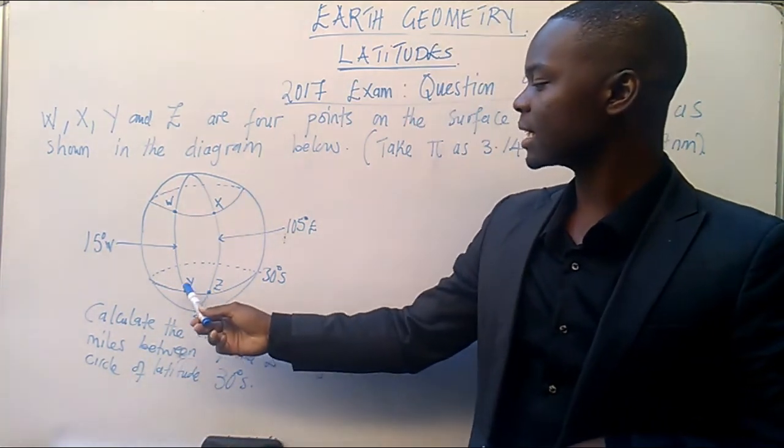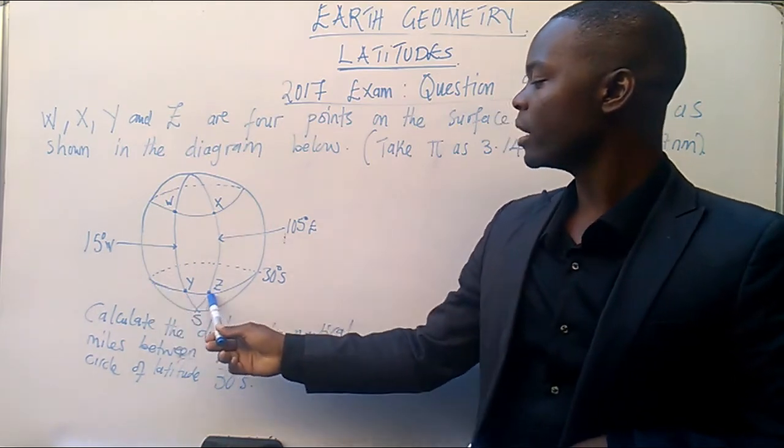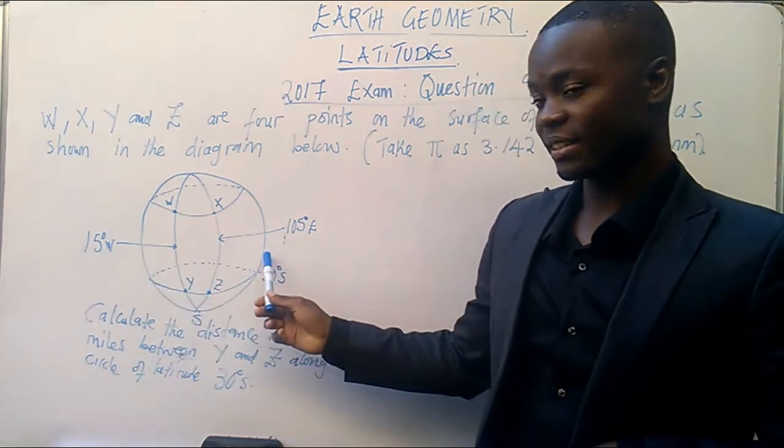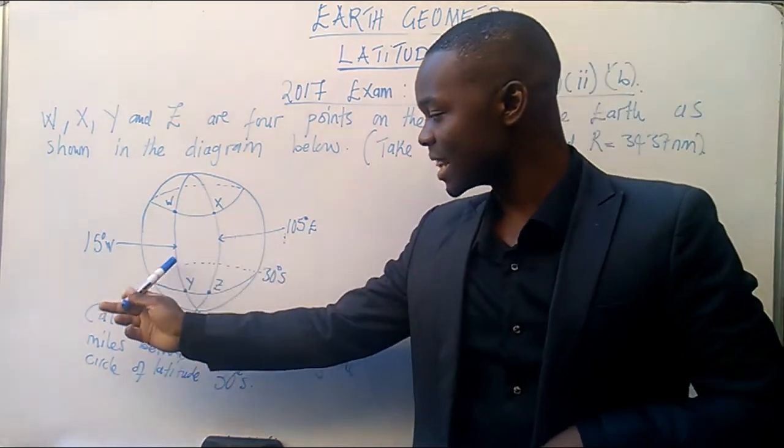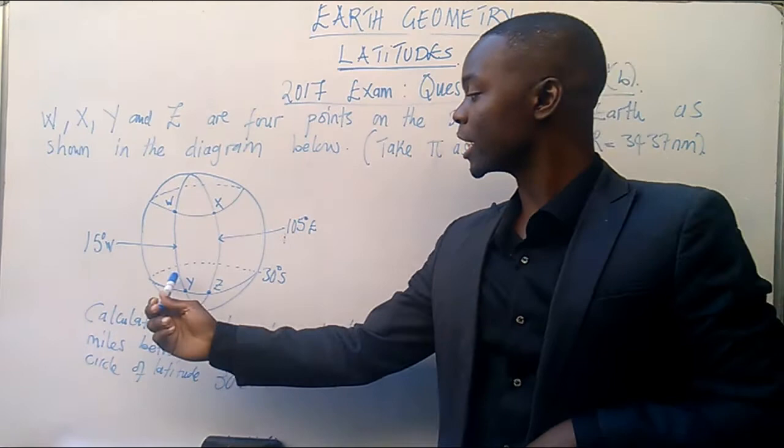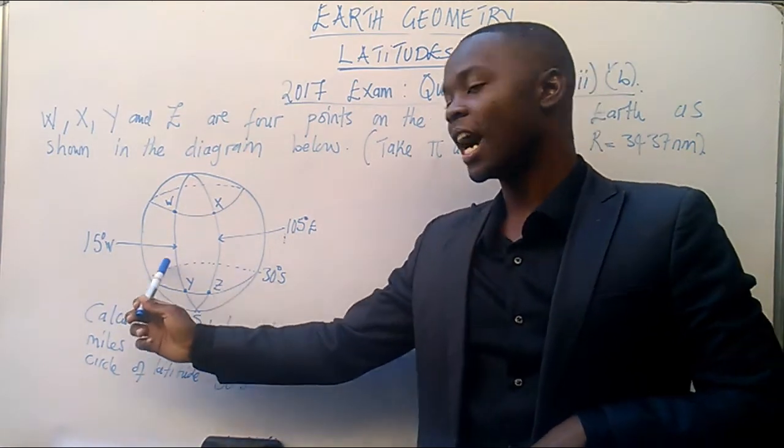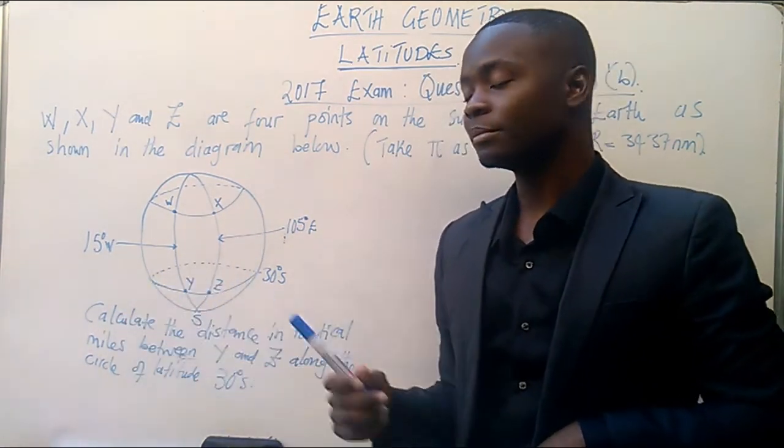Calculate the distance in nautical miles between Y and Z along the circle of latitude 30 degrees. So we are calculating this distance, Y, Z, along the circle of 30 degrees. This one. Very simple. And if you have understood the previous video, you can calculate this region, this small region, r, if you want.